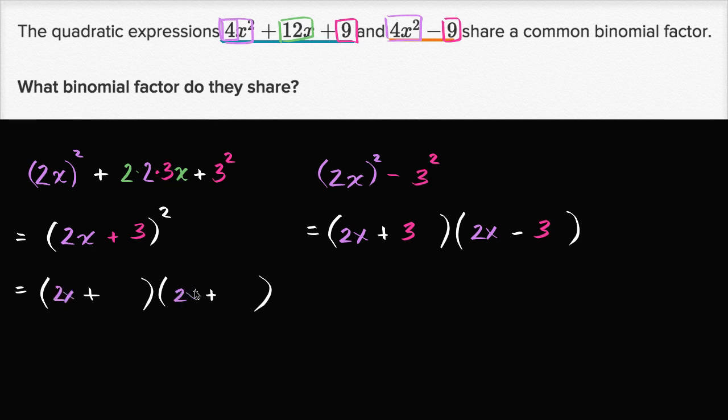So 2x, 2x, and then you have +3, +3. These two are equivalent. And so you see, we see that we share, in both of these, we share at least one, or we share exactly one, 2x + 3. So that's the binomial factor that they share. 2x + 3.